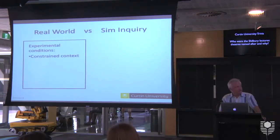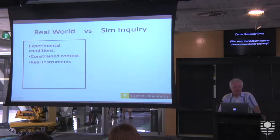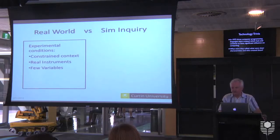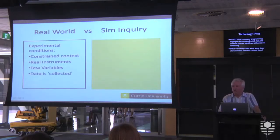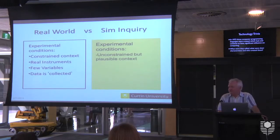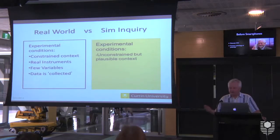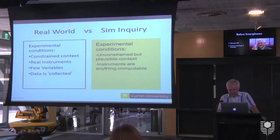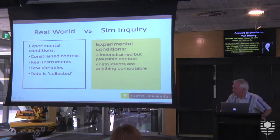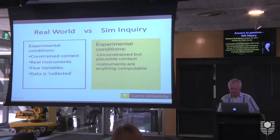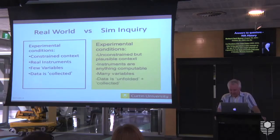In the real world we try to constrain context by having few variables. We need real instruments, so there's a lot of noise, and we try to keep variables as small as possible to control everything in the experimental model — to know what's causing things — and then we collect data. But notice what happens in a simulation: the context isn't strictly constrained, although the digital space already defines the boundaries. If all the toys in that space have affordances, and the numbers are so large it might as well be infinite, it's a fairly unconstrained context. The instruments can be anything computable, and you can have many variables because the computer handles a lot of it.